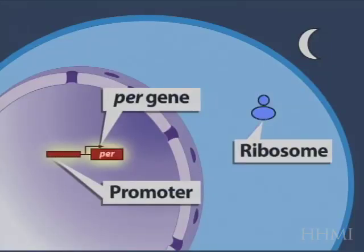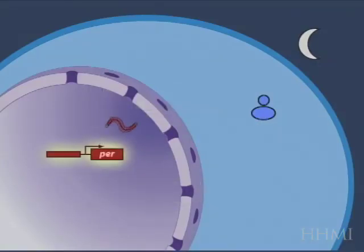There's a ribosome, and this gene is now active, illustrated by this glow, and the gene is producing messenger RNA, which is being turned into protein, into period protein.